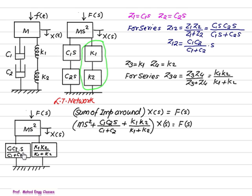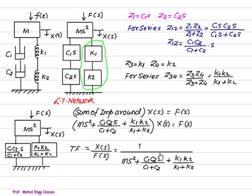Impedance of M S square, this is C1, C2s upon C1 plus C2. This is K1, K2 upon K1 plus K2. So, input is F of S, output is X of S. Our transfer function, X of S upon F of S, 1 upon M S square plus C1, C2s upon C1 plus C2 plus K1 into K2 upon K1 plus K2.